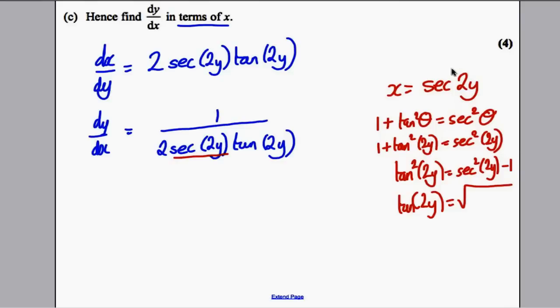Now, sec is x. So sec squared is x squared subtract 1. So we could replace this with the square root of x squared subtract 1. So therefore, as a final answer, it would be 1 over 2 times x times the square root of x squared subtract 1. And we have our dy by dx in terms of x. And there, we're done for four marks.